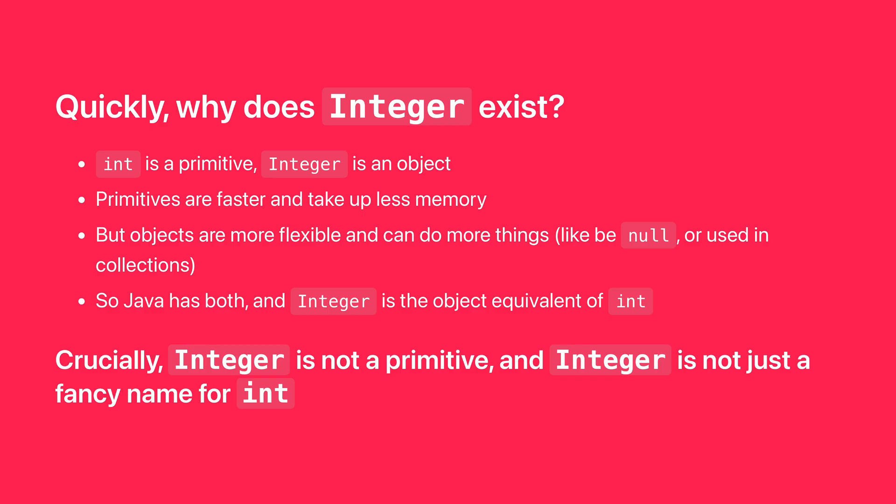It works a little differently for strings, but quickly — why does big-I Integer even exist? Primitives are faster and take up less memory, but objects are more flexible and can do more things, like be null or used in collections. Crucially, Integer is not a primitive, and Integer is not just a fancy name for int.